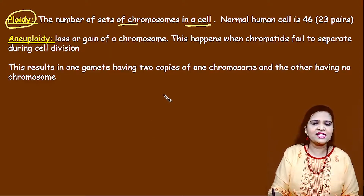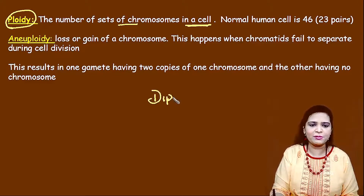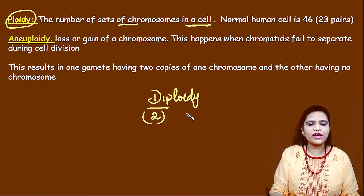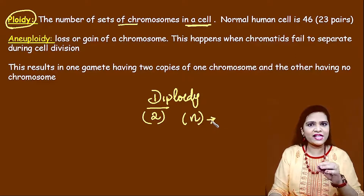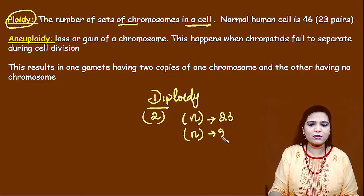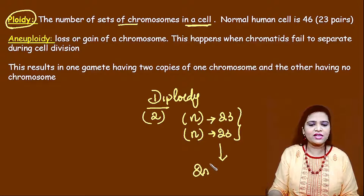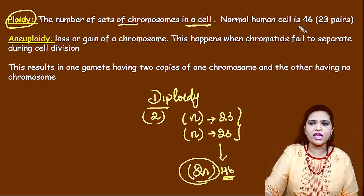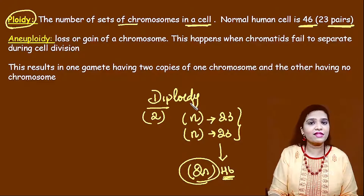For example, human beings have diploidy — we are diploid. Di means two. N is the ploidy, so the egg cell provides N, that is 23 chromosomes, and the sperm cell provides N, 23 chromosomes. When they fertilize, the zygote contains 2N, that is 46. This is called diploidy. So every cell in a human being is diploid in nature, containing 46 chromosomes, occurring in 23 pairs.